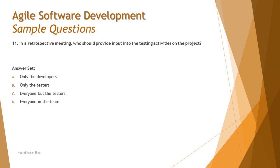Question number 11 asks: in a retrospective meeting, who should provide input into testing activities on the project? Three things to consider: it's a retrospective meeting, who provides inputs, and it concerns testing activities. The options are: only developers, only testers, everyone except the tester, or everyone on the team.